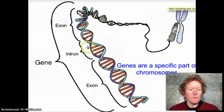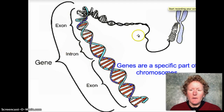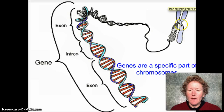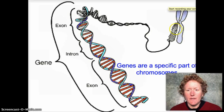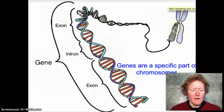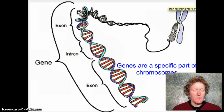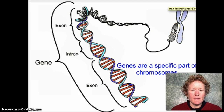Let's go over those big ideas. Here's a picture of a chromosome. That chromosome is made of a strand of DNA that's wound up on proteins — kind of like spools — called histones.